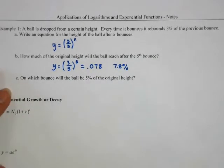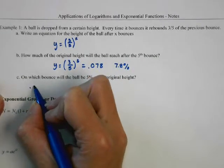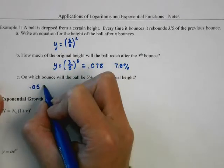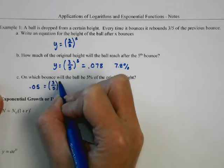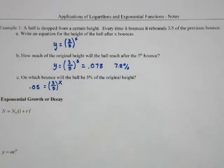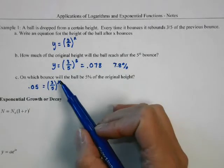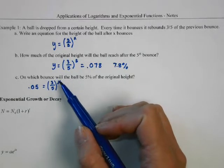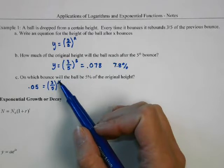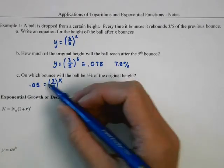For part c, on which bounce will the ball be at 5%? We'll set the equation equal to 0.05 and then solve. Anytime we're trying to solve an equation where the x is our exponent, we're going to use logarithms.